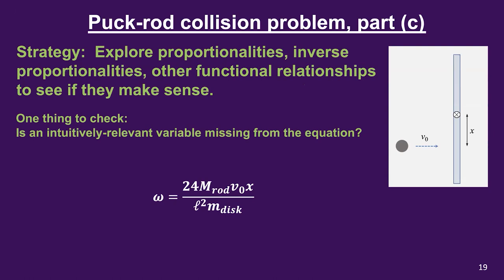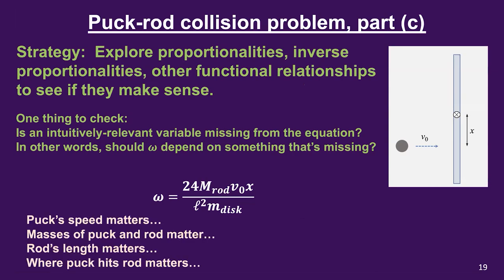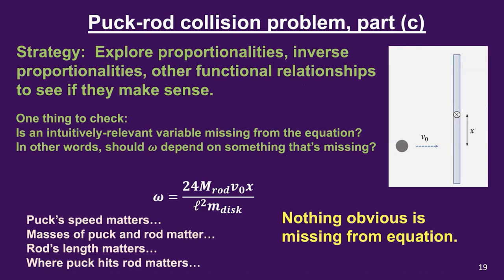Looking at the diagram intuitively, how fast the rod ends up spinning should depend on how heavy the puck is, how fast the puck's moving, the mass of the rod, maybe the length of the rod, and definitely on x — this distance. These are all things that intuitively might matter, but they're all already in the equation. So there's nothing obvious missing from this equation, and we can't get a quick answer by finding a missing variable.